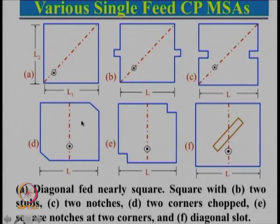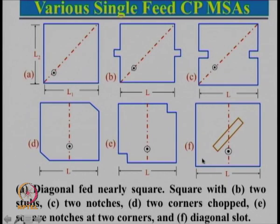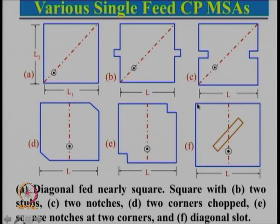Instead of chopping the corner we can also cut a notch in the corner with a similar effect. We can also cut a slot — in that case one diagonal length will go one way and another diagonal length will go differently, so the two diagonal lengths are different and we feed in between the two diagonal lengths.